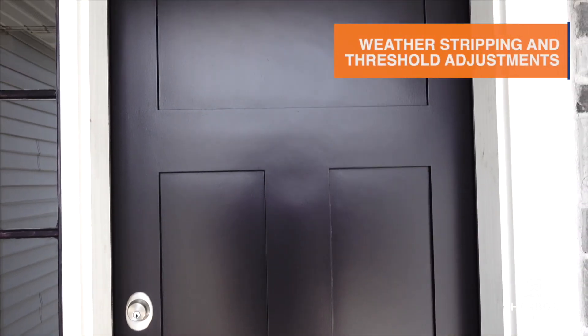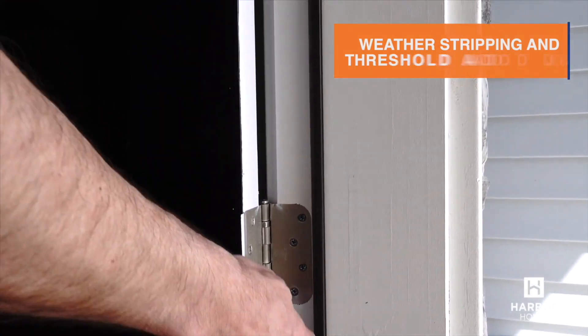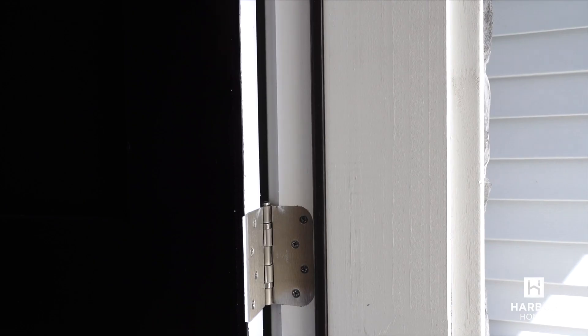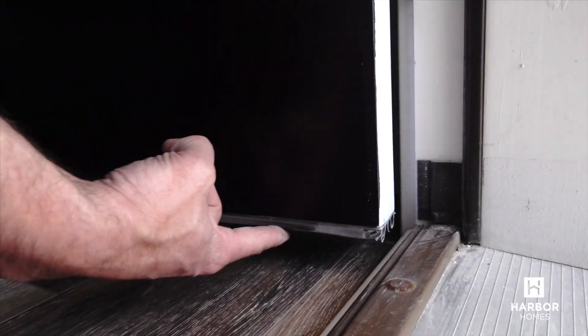Exterior doors have three types of weatherstripping: a perimeter seal, corner pads, and a sweep.